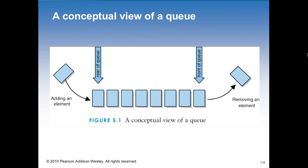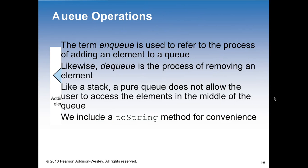Here's our conceptual view. Notice, if you remember from the last lecture on stacks, it was up and down vertical. So this is where we get that horizontal orientation. So the conceptual view shows adding an element at the rear and removing an element from the front. Pretty much think of a line of people waiting in terms of how the structure works.